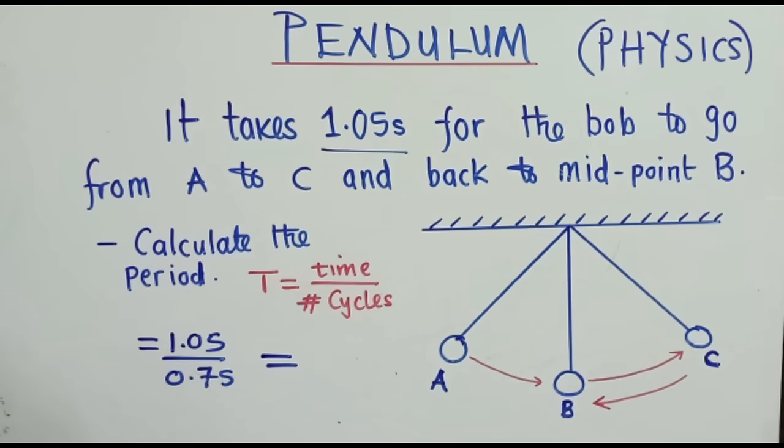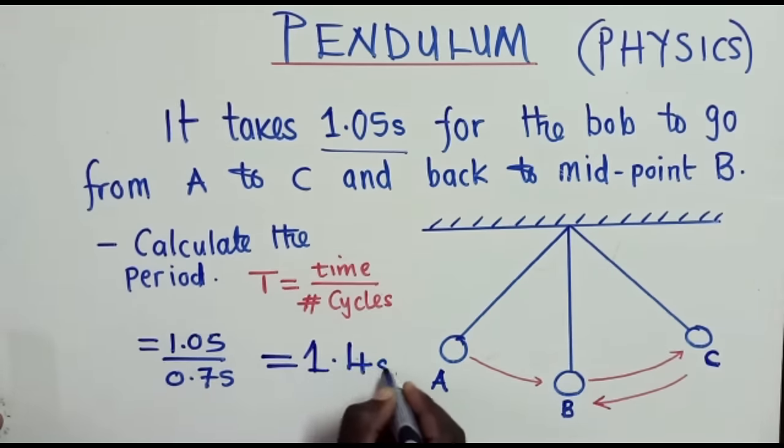So we finish it up. What is the value of 1.05 over 0.75? So 1.05 divided by 0.75. Of course, we're getting 1.4. So the answer here is 1.4 seconds. The units for period, it's a second. So this is our answer.